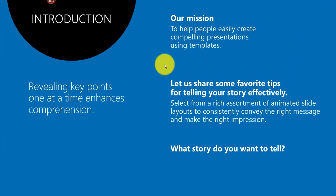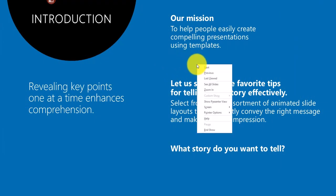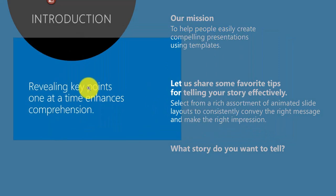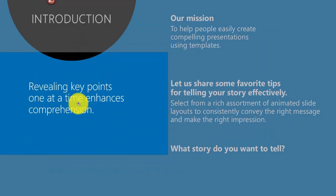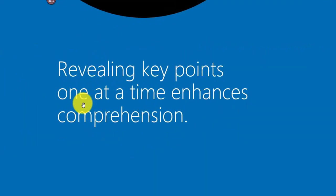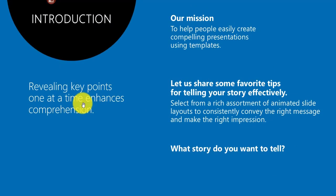To zoom in during your slideshow, right-click and select Zoom In. Move your mouse to choose where you want to zoom, then click and it will zoom in on that area of your slide. Press Escape when you're finished to return to your slideshow.